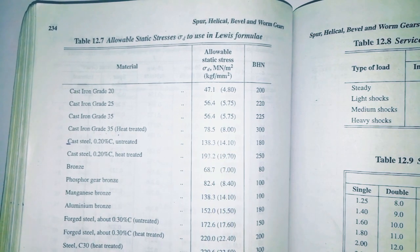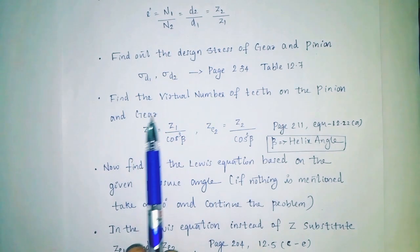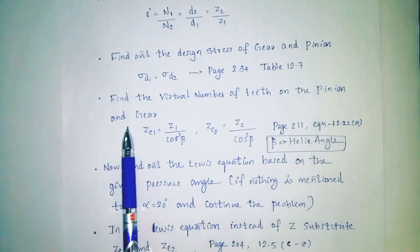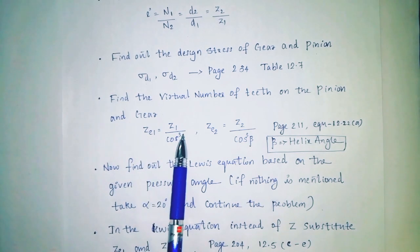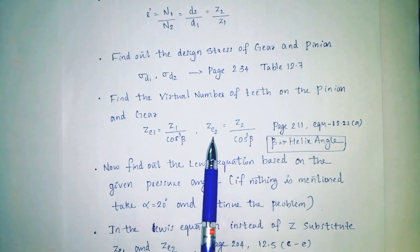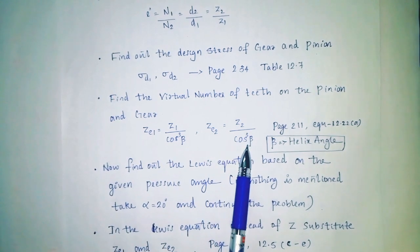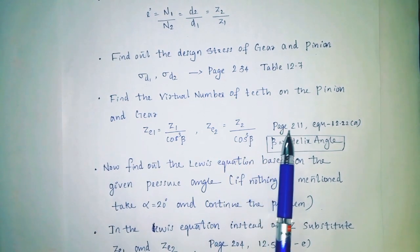If we are using virtual number of teeth for pinion and gear, the equations used are: Z'1 equal to Z1 divided by cos³β, and Z'2 equal to Z2 divided by cos³β.